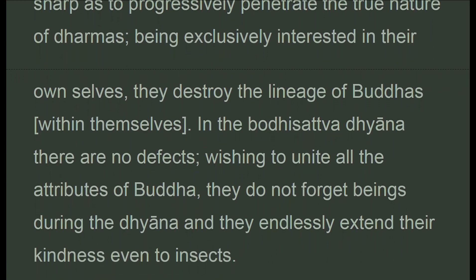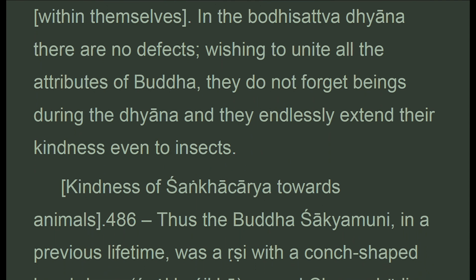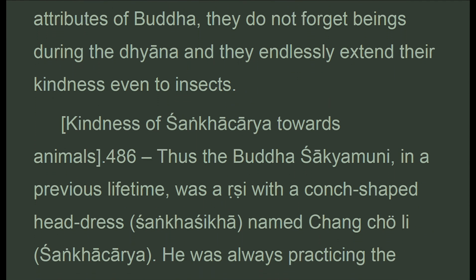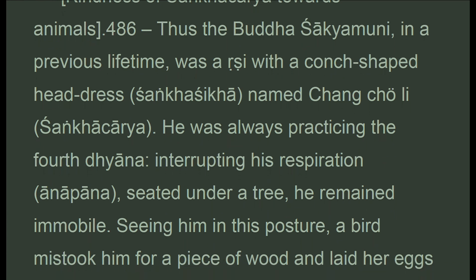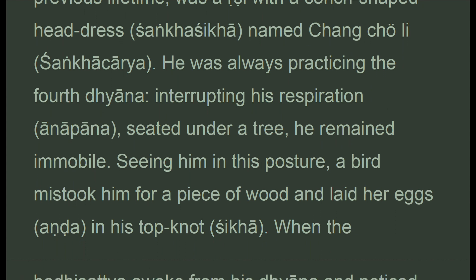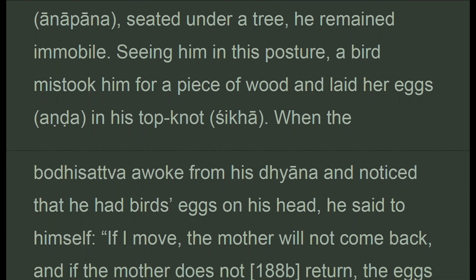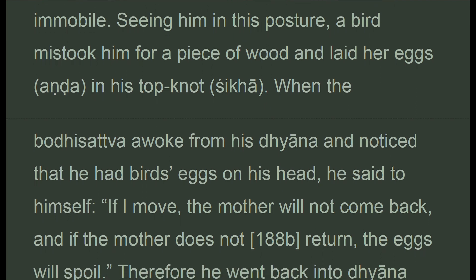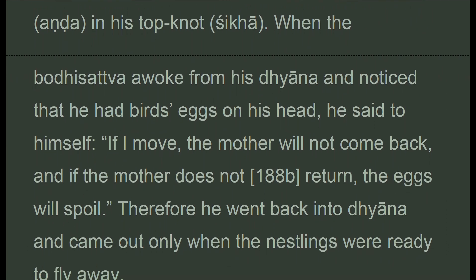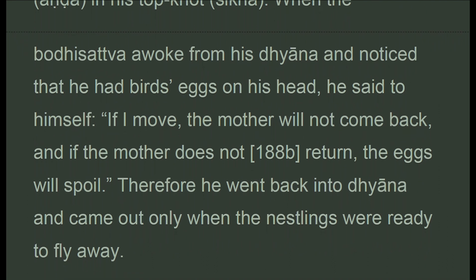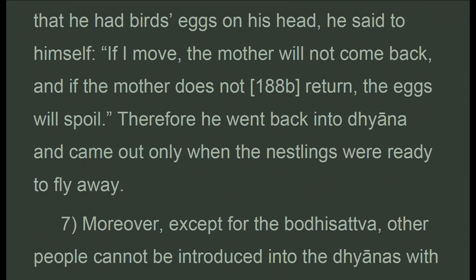Wishing to unite all the attributes of a buddha, bodhisattvas do not forget beings during the dhyana and endlessly extend their kindness even to insects. Thus the Buddha Shakyamuni, in a previous lifetime, was a rsi with a conch-shaped headdress named Shankhacarya. He was always practicing the fourth dhyana — interrupting his respiration, seated under a tree, remaining immobile. Seeing him in this posture, a bird mistook him for a piece of wood and laid her eggs in his topknot. When the bodhisattva awoke from dhyana and noticed the bird's eggs on his head, he said: 'If I move, the mother will not come back, and if the mother does not return the eggs will spoil.' Therefore he went back into dhyana and came out only when the nestlings were ready to fly away.